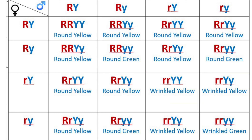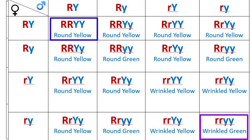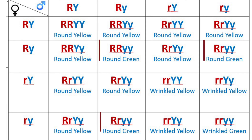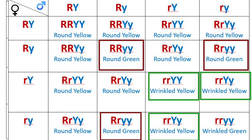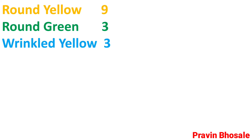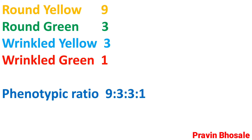The phenotypic ratio is 9 is to 3 is to 3 is to 1. We took two parent plants — round yellow crossed with wrinkled green — and got two new combinations: round green and wrinkled yellow. So: round yellow nine, round green three, wrinkled yellow three, wrinkled green one. The phenotypic ratio is 9 is to 3 is to 3 is to 1.